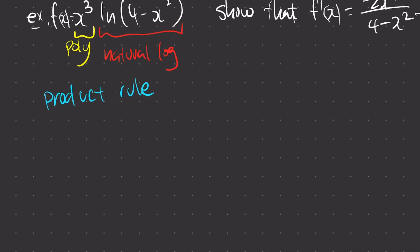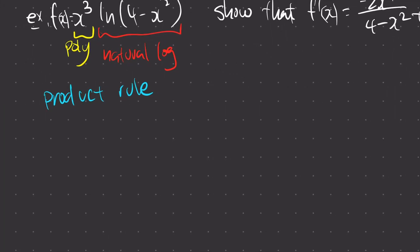How do you d the first and not d the second? D the first is simply 3x squared. Then don't d the second — so what I do is I just copy down ln(4 minus x squared). Very easy.